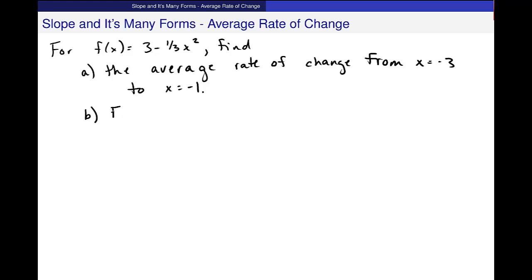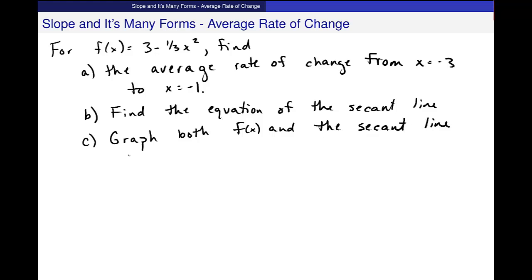Part (b) is find the equation of the secant line associated with x equal to negative 3 and x equal to negative 1. And (c) graph both f(x) and the secant line on the same graph.